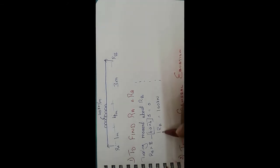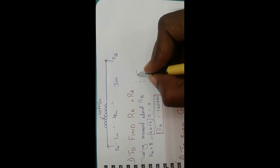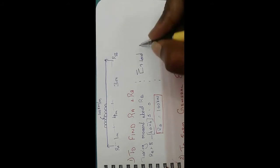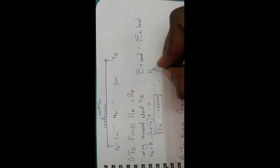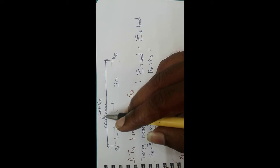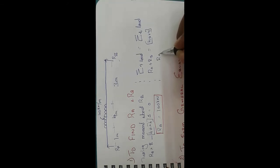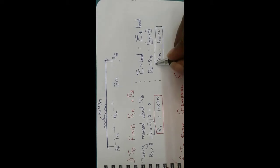From this we can find that RA is 100 kilonewton. Then applying the equilibrium condition — summation of upward loads equals summation of downward loads — RA plus RB equals 40 into 4. Since we already know RA, we can easily find RB. This completes the first step of finding RA and RB.